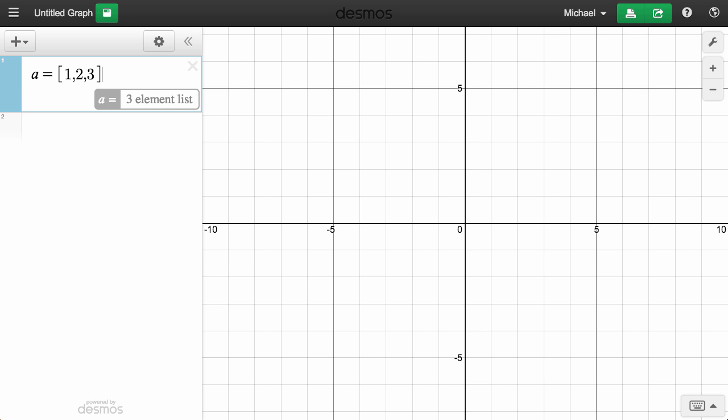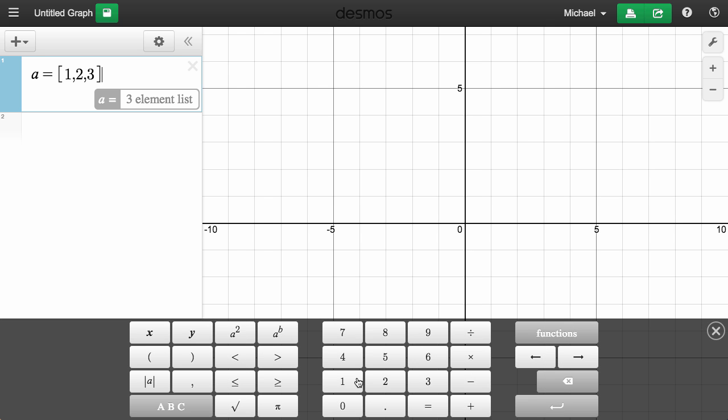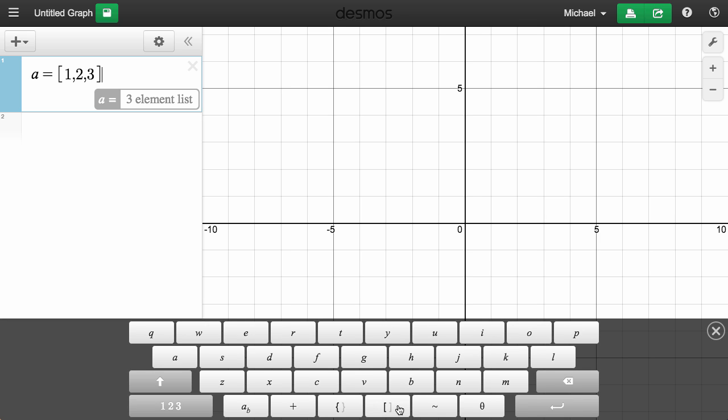Square brackets are usually near the top right of the keyboard. You can also find them on the ABC menu in the Desmos keypad. They're right here at the bottom.